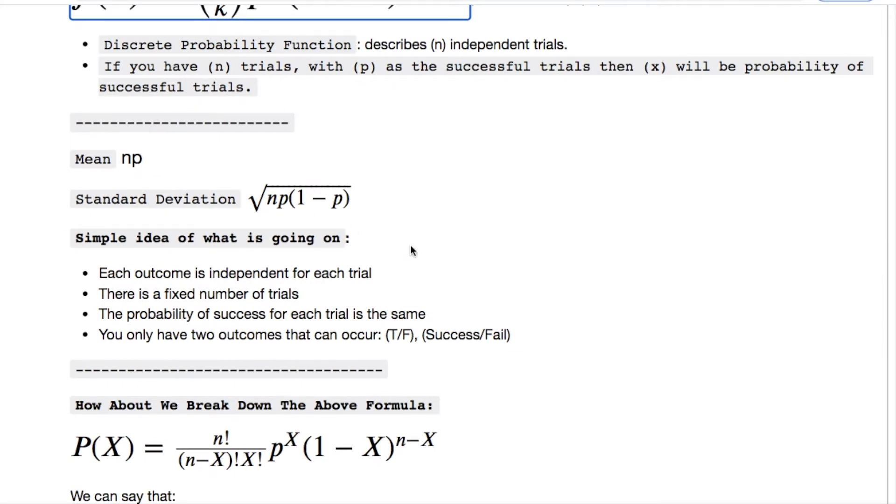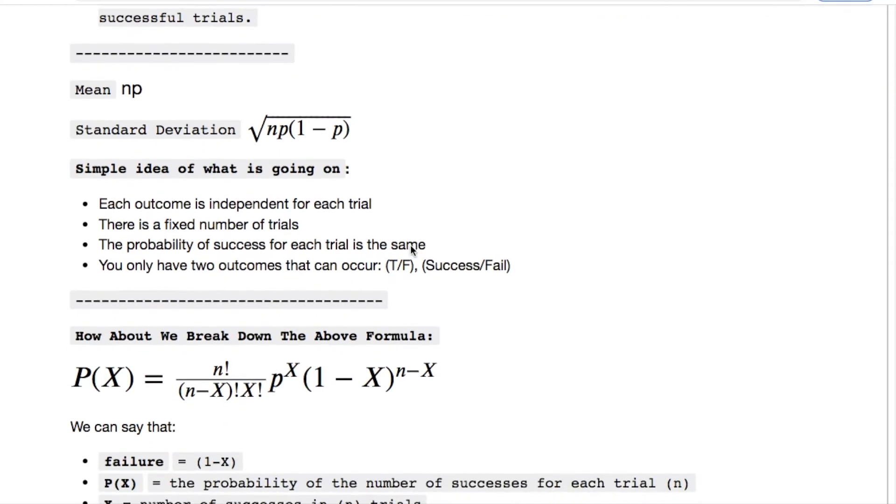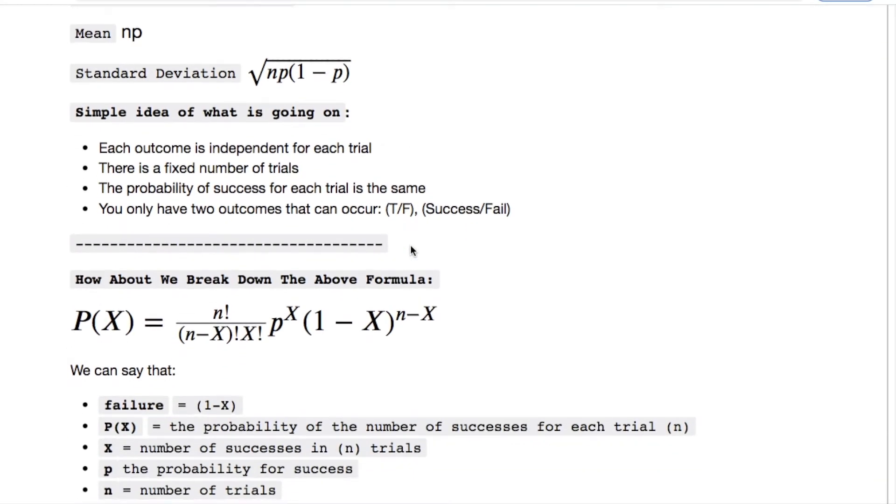The simplified version of thinking about this can stem from four things. Each of your outcomes is independent for each trial. You have a fixed number of trials and the probability of success for each trial is the same. And the only two outcomes you have is true, false, success, fail.